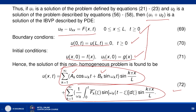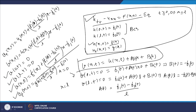In this lecture, we have seen how to solve a non-homogeneous wave equation with non-homogeneous boundary conditions and initial conditions, by converting the problem into simpler sub-problems through a linear transformation and superposition. We will continue in the next lecture. Thank you very much for listening.